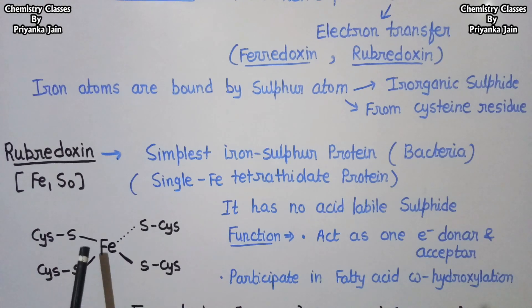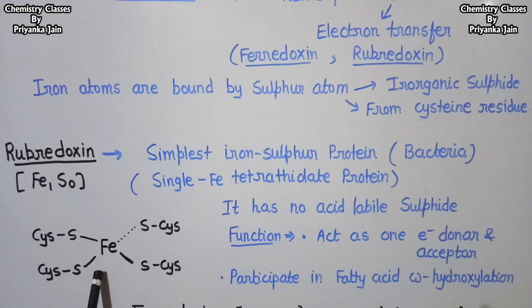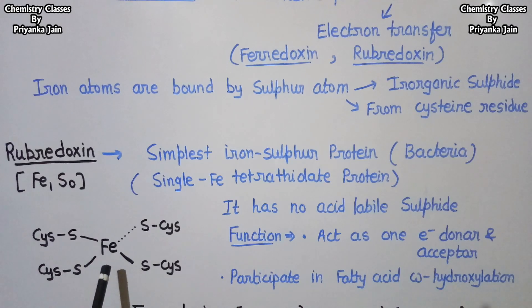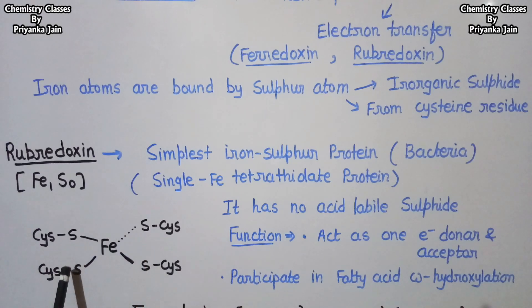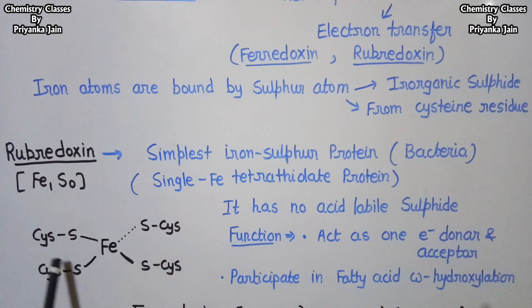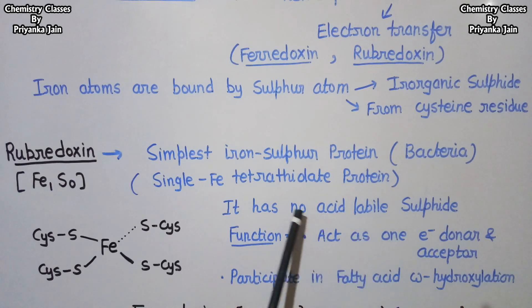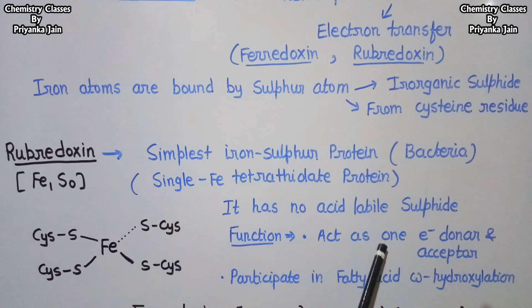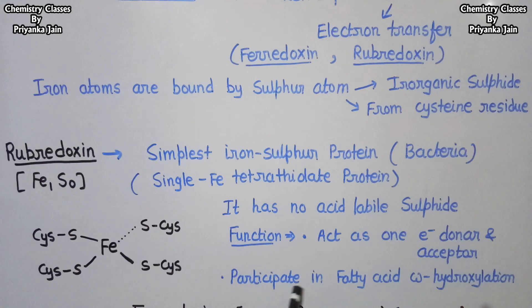Looking at its structure, rubredoxin has a distorted tetrahedral structure. The iron is present at the center of a distorted tetrahedron, and the four positions are occupied by four sulfur atoms from cysteine residues. There is no acid-labile sulfide or inorganic sulfide group present. Regarding its function, it acts as a one-electron donor or acceptor, and most probably participates in fatty acid omega-hydroxylation, though its functions are not fully known.